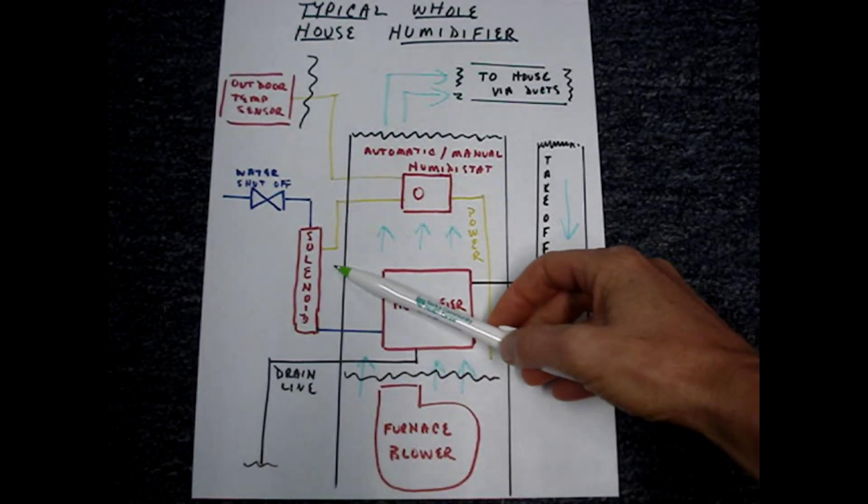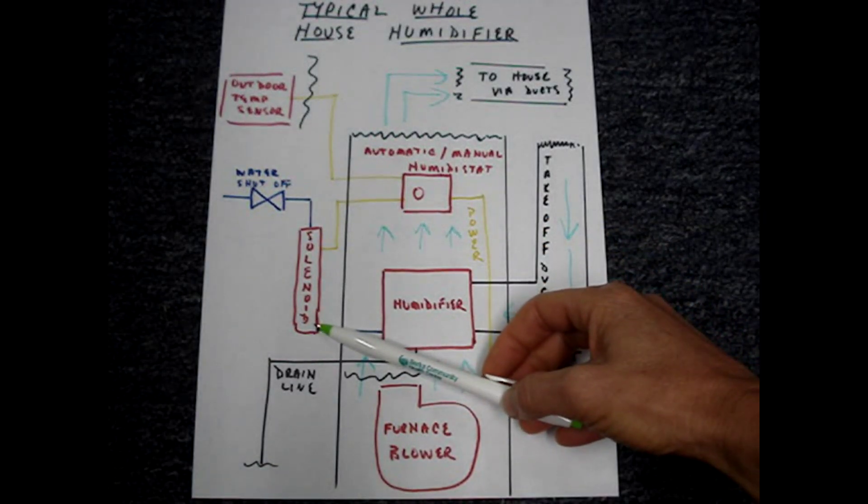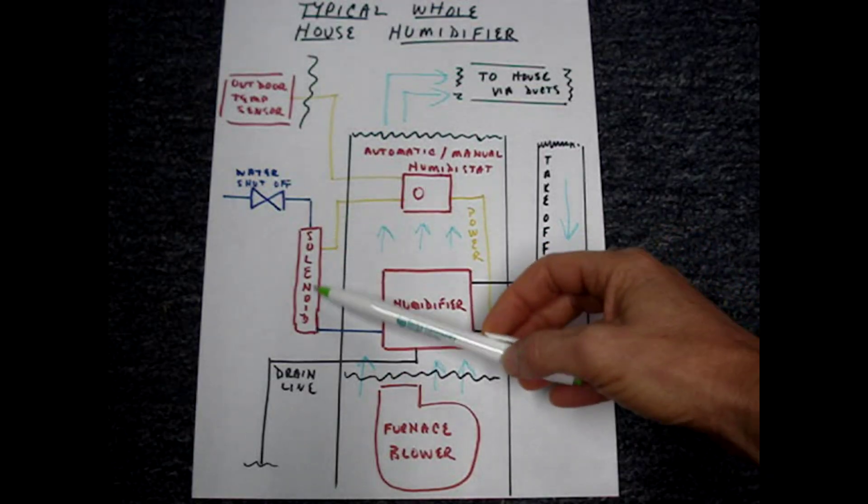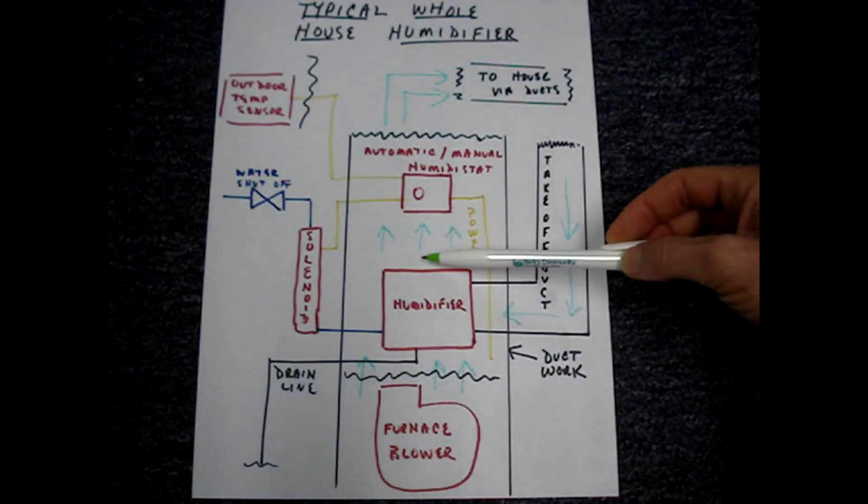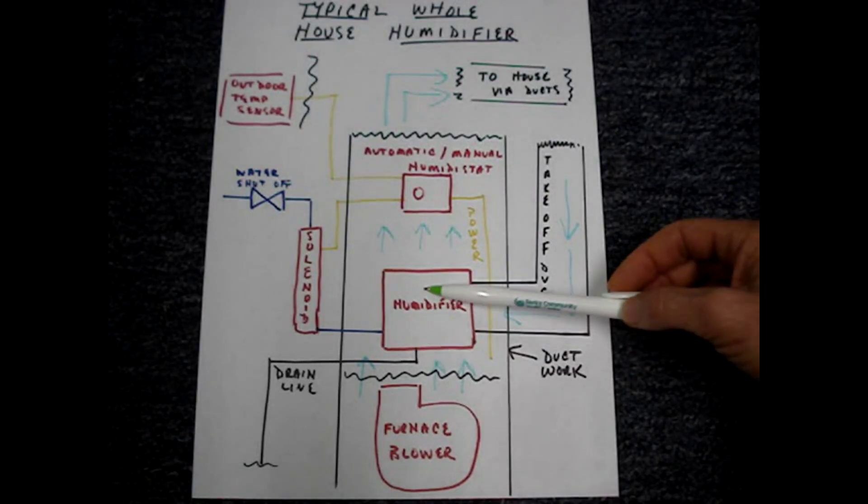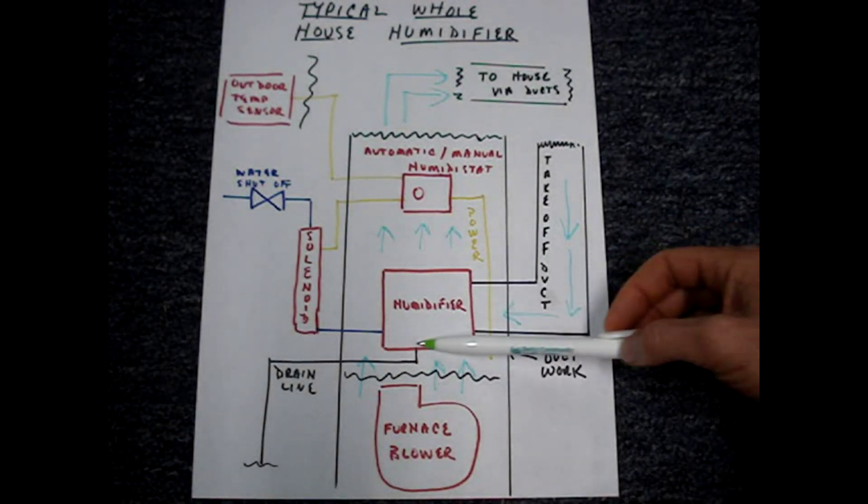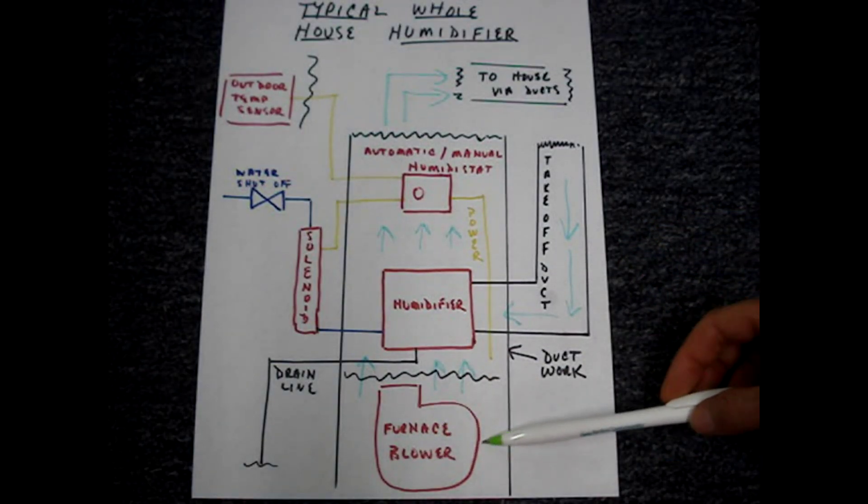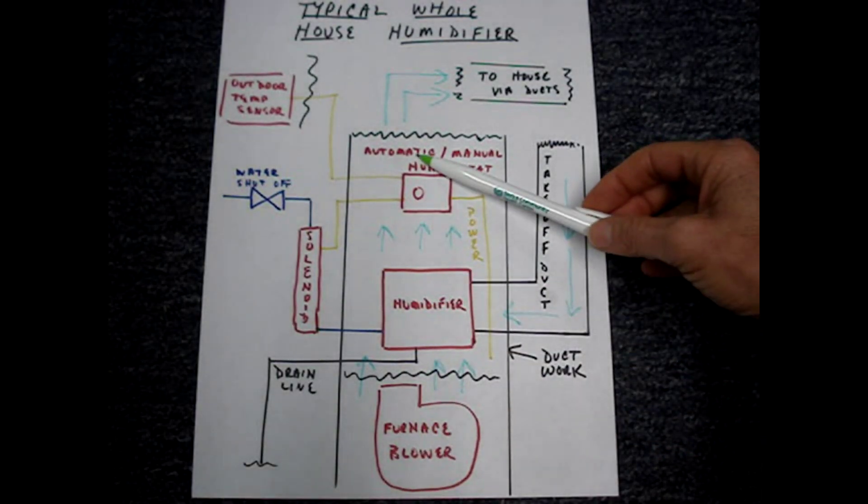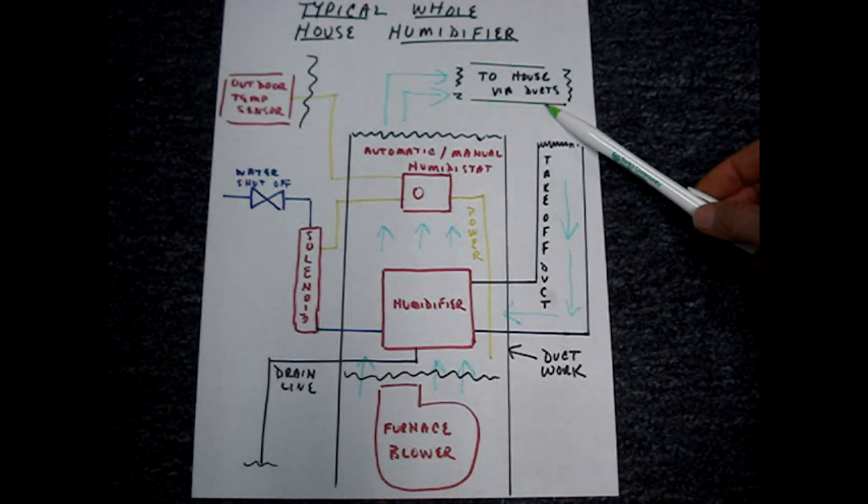After the correct amount of water passes through the solenoid, the humidistat closes it. The water then goes through the evaporator pad or drum or whatever media the humidifier has. The furnace blower distributes the humidified air throughout the house.